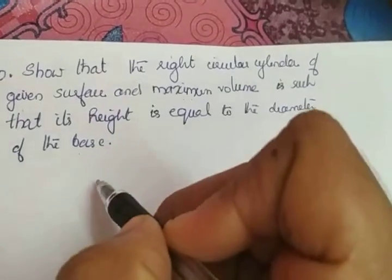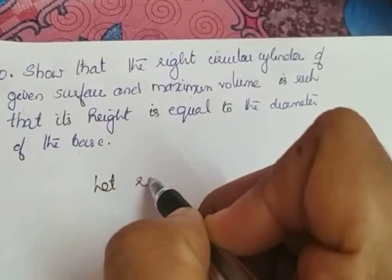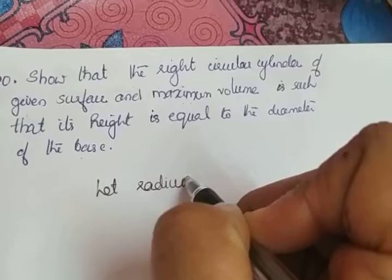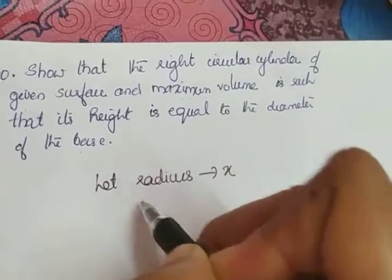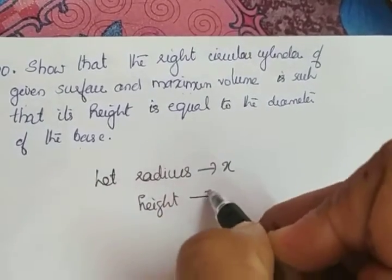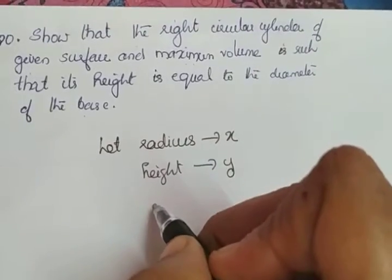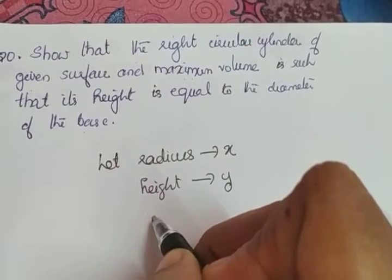First, we will take the radius of the cylinder as x, height of the cylinder as y. Let s be the surface area and v be the volume.